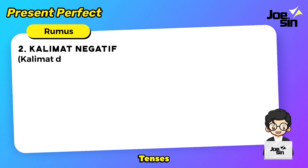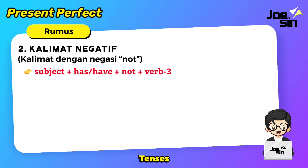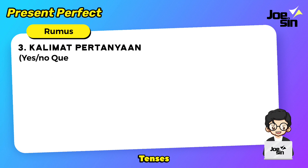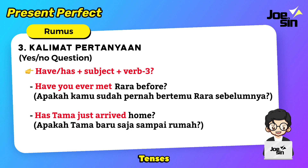Yang kedua, kalimat negatif — kita tinggal tambahkan not antara auxiliary verb dan kata kerjanya. Contoh: where is Rossi? I haven't seen him yet — aku belum melihatnya. I haven't opened that box so far — aku belum membuka kotak itu sejauh ini. Yang terakhir adalah kalimat pertanyaan. Kita tinggal pindah have or has ke depan sebelum subject — yes/no question. Contoh: have you ever met Rara before? — apakah kamu sudah pernah bertemu Rara sebelumnya? Has Tama just arrived home? — apakah Tama baru saja sampai rumah?